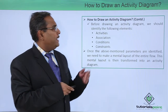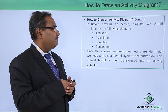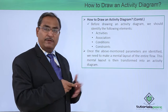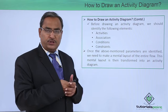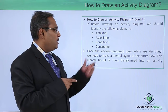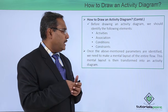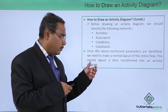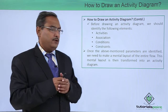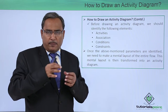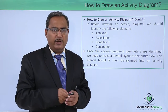So how do we draw an activity diagram? Before drawing one, we should identify the following elements: the activities and operations being performed in the system, the associations — how they are related — and different conditions and constraints. Once these parameters are identified, we need to make a mental layout of the entire flow, and this mental layout is then transformed into an activity diagram.